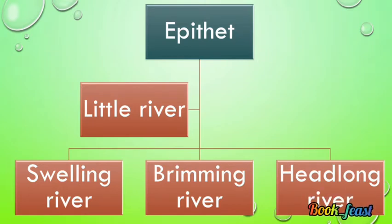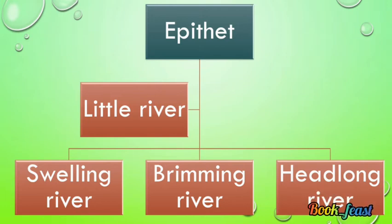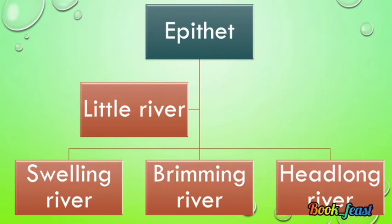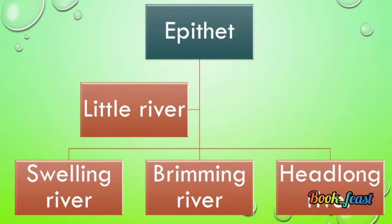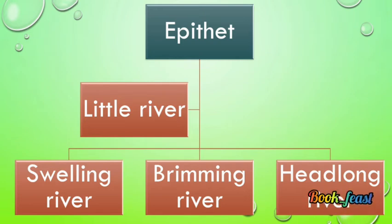Epithet — when you add more meaning to a noun, when you qualify the noun, it is known as epithet. Here the noun is the river, and the river takes up the adjectives: little, swelling, brimming, and headlong.